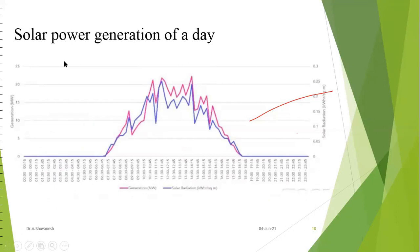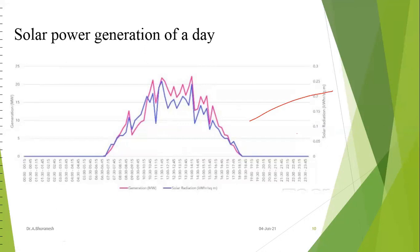The daily solar power generation plot shows that generation starts after 7 AM, reaches peak values around noon to 4 PM, then reduces and stops. The important thing is that this pattern is not the same every day — on a cloudy day at 11 AM, the peak will be absent or reduced. Due to cloudy conditions and rain, the daily generation pattern changes significantly.